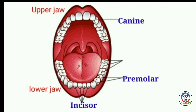The third type is premolars. Premolars are broad teeth with flattened tops. They help to grind the food. There are eight premolars — four each in the upper and lower jaw.